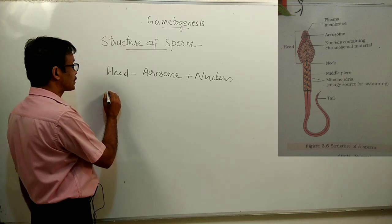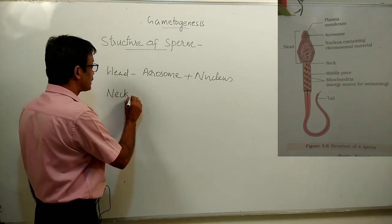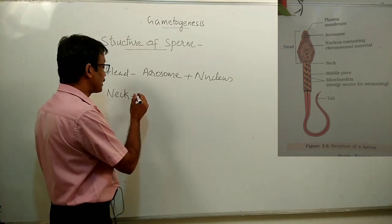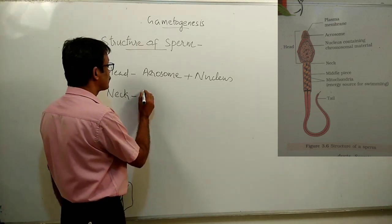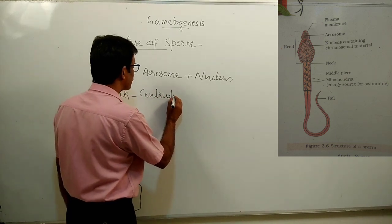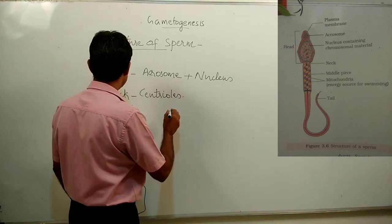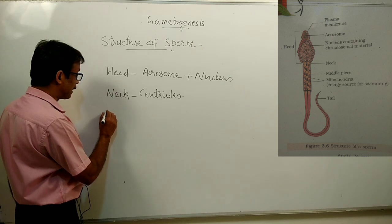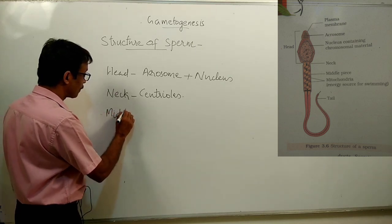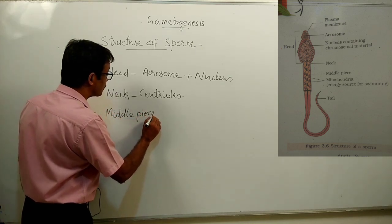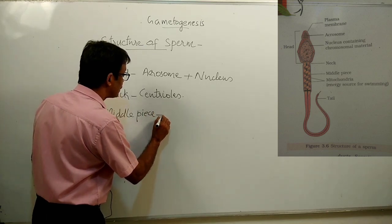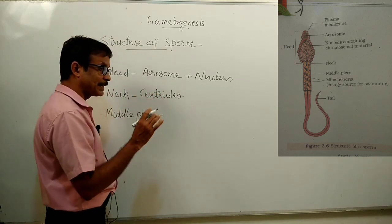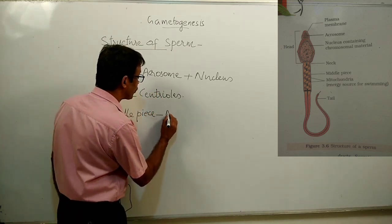The next part of the sperm is a short neck. The neck is important because it possesses two centrioles. Two centrioles are present in the neck region. Then the third part is the middle piece. The middle piece possesses cytoplasm and numerous mitochondria.